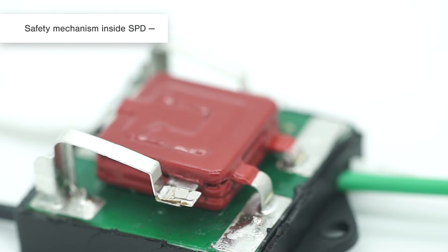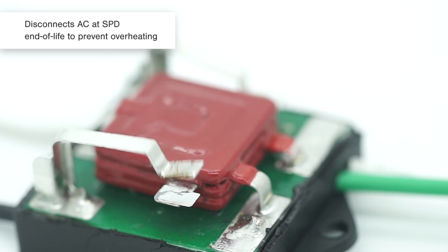Littlefuse LSP series modules feature a thermal disconnect that opens to disconnect AC power, preventing overheating and turning off the luminaire to indicate maintenance as needed.